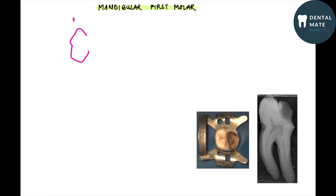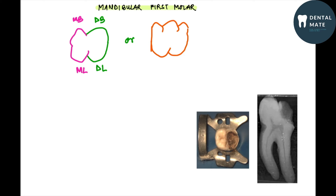Let us first look at its anatomy. The crown of the mandibular first molar can have four or five cusps. There are two mesial cusps — mesiobuccal and mesiolingual — and two distal cusps — distobuccal and distolingual. Sometimes there can be a fifth distal cusp present on the buccal side, known as the distal cusp.